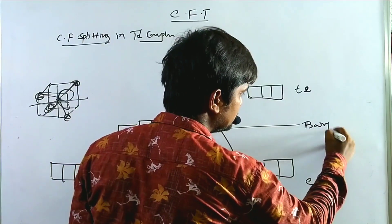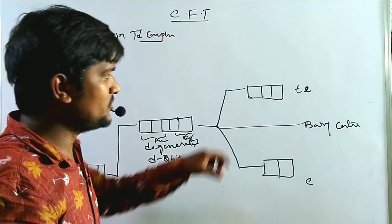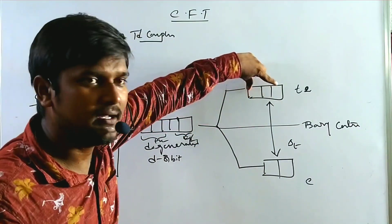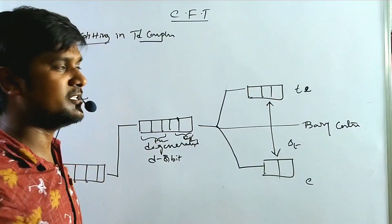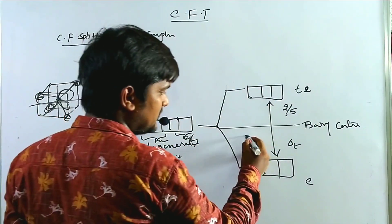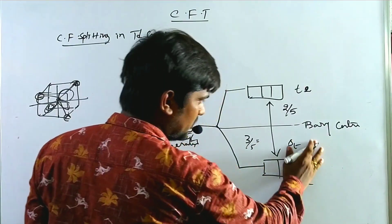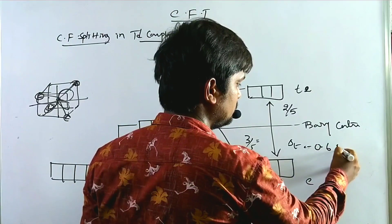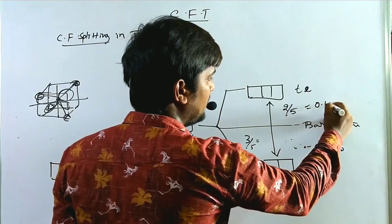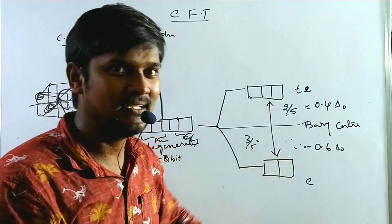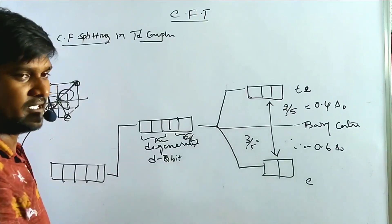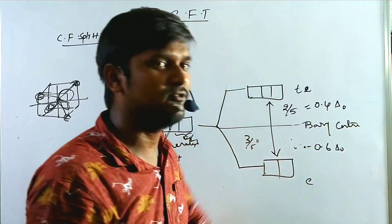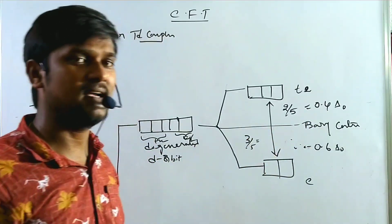This is the barycenter. The three T2 orbitals distribute the splitting energy. The energy gap is delta T. The three orbitals share 3/5 and the two lower orbitals share 2/5. The lower orbitals are stabilized by 0.6 delta O (negative) and the upper set is destabilized by 0.4 delta O (positive). This gives the crystal field splitting energy diagram for tetrahedral complexes.